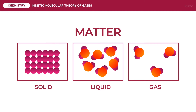For example, the spacing of the particles defines the shape of matter. Solids are the most ordered in arrangement, while gases have the least order. This means that the energy of gas particles is very high compared to the energy of solid particles, as seen in their definite shapes.